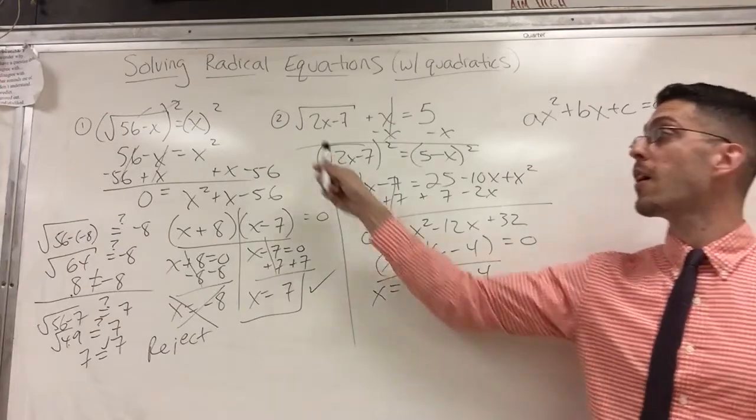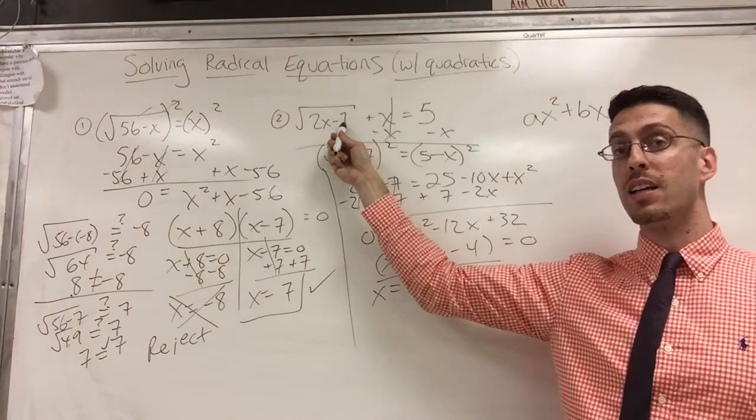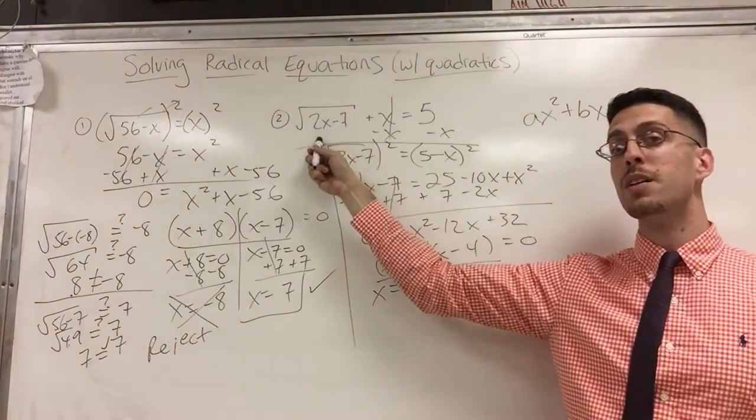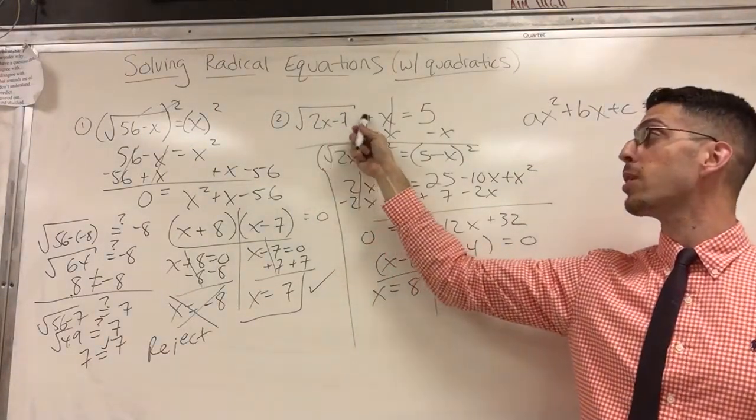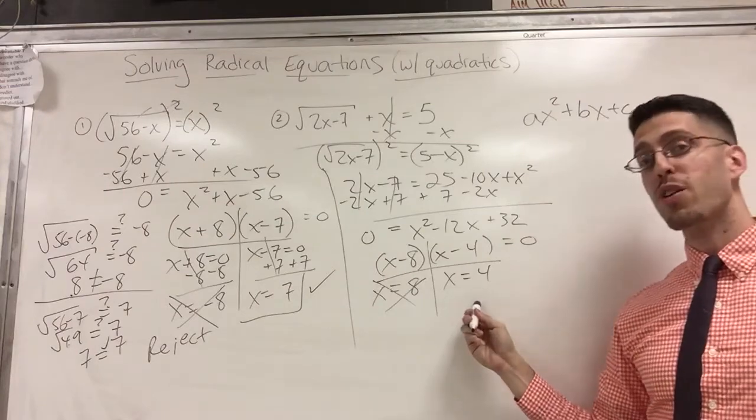Let's see, does 8 work? 2 times 8 is 16. 16 minus 7 is 9. What's the square root of 9? 3. 3 plus the original x, which is 8. 3 plus 8, does that equal to 5? No. Fail. Sorry, no good.